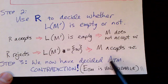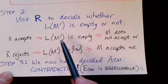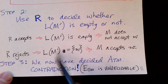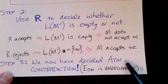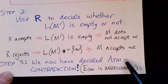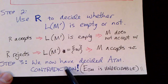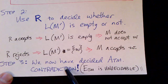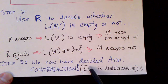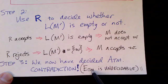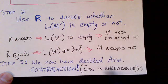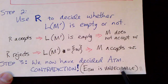If we have R, we have built a decider for the acceptance problem for Turing machines. But of course we know that cannot exist, so this is a contradiction. Our conclusion is that testing for emptiness of a Turing machine is itself undecidable. And that concludes the proof.